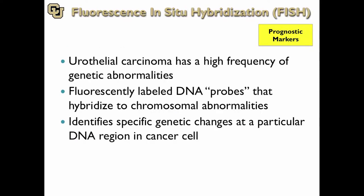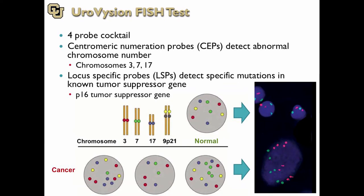The FISH test — UroVysion is the trade name used in urology and bladder cancer specifically. We're looking at DNA probes. If you have a normal cell with two chromosomes and the gene on both chromosomes, you look at paired colors. If you have a cancer, you have multiple copies of the chromosome — you see more than two red dots — and that helps you make the diagnosis that it's a cancer.